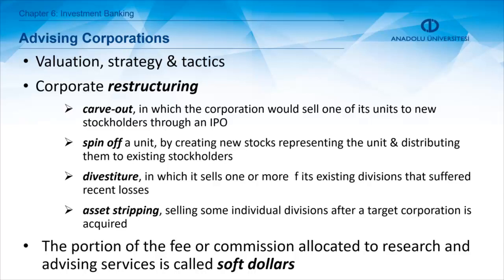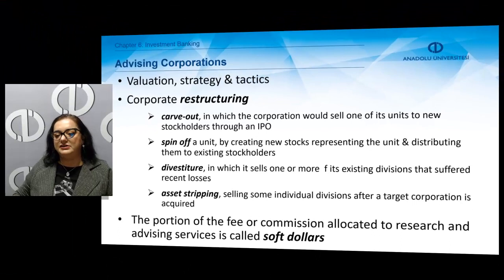Corporate restructuring types include a carve-out, spin-off, divestiture, or asset stripping. In a carve-out, the corporation sells one of its units to new stockholders through an initial public offering. In a spin-off, companies create new stocks representing a unit and distribute them to existing shareholders. In a divestiture, the company sells one or more of its existing divisions, typically those suffering recent losses. In asset stripping, individual divisions can be sold off after the target corporation is acquired.